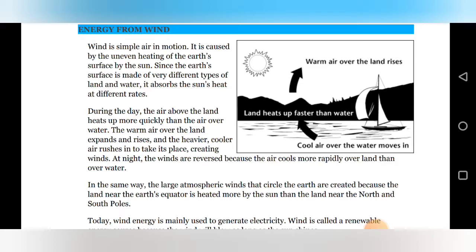So let's see what they have said energy from the wind. Wind is a simple air in motion. It is caused by the uneven heating of the earth surface by the sun. Since the earth surface is made of very different types of lands and water, it absorbs the sun heat at different rates. That means due to the different shapes and sizes of lands on the earth surface, it has different properties of absorbing the heat or releasing the heat.